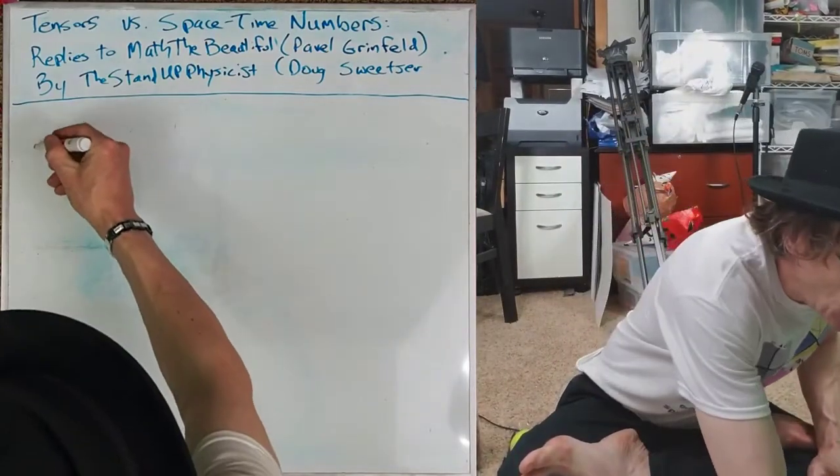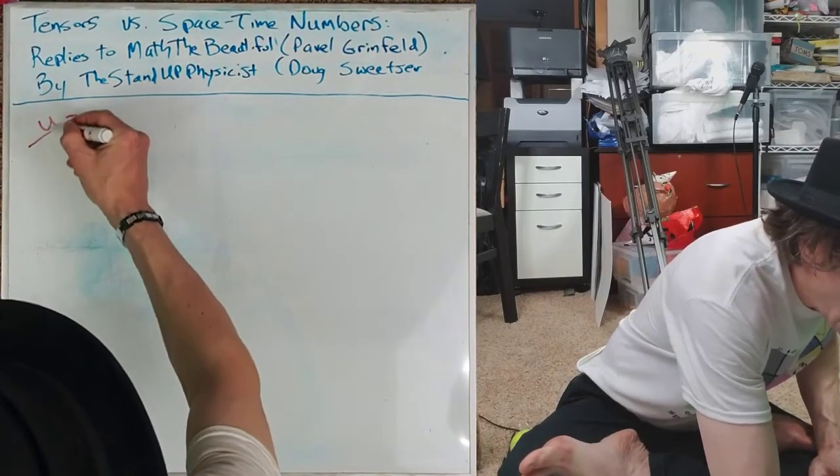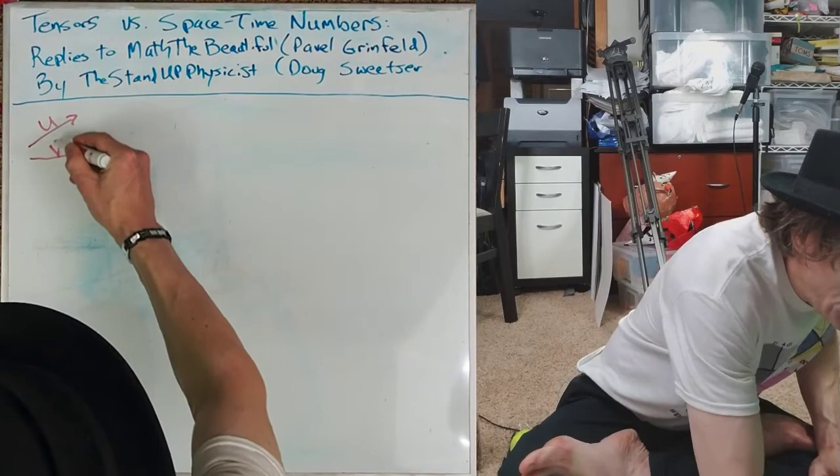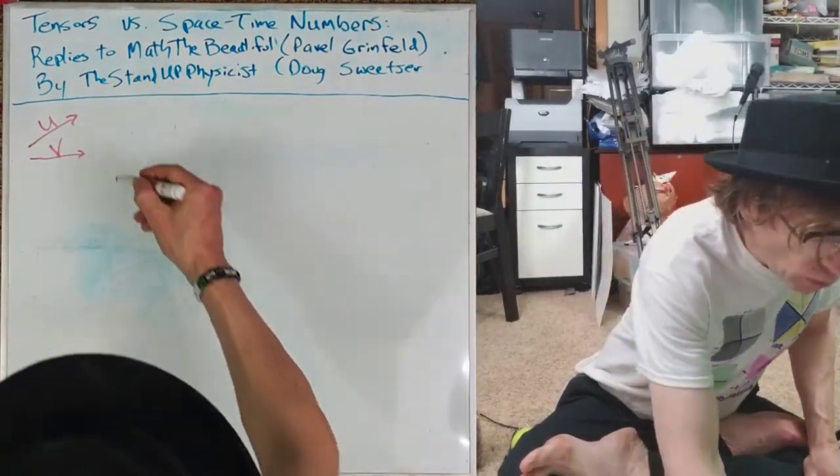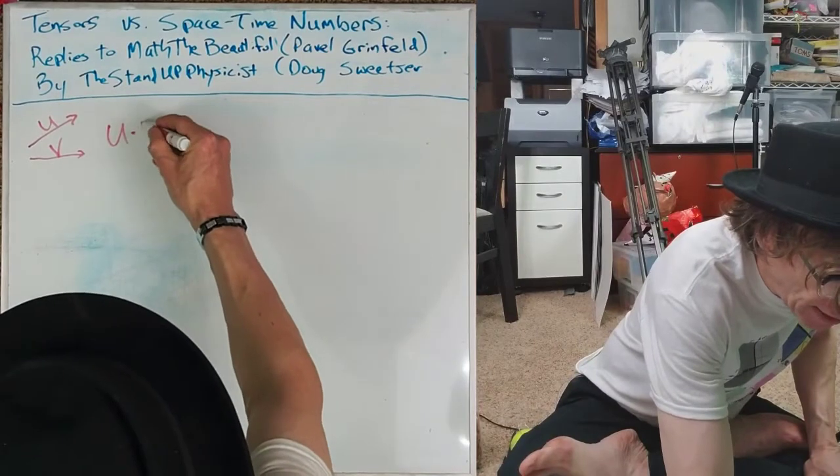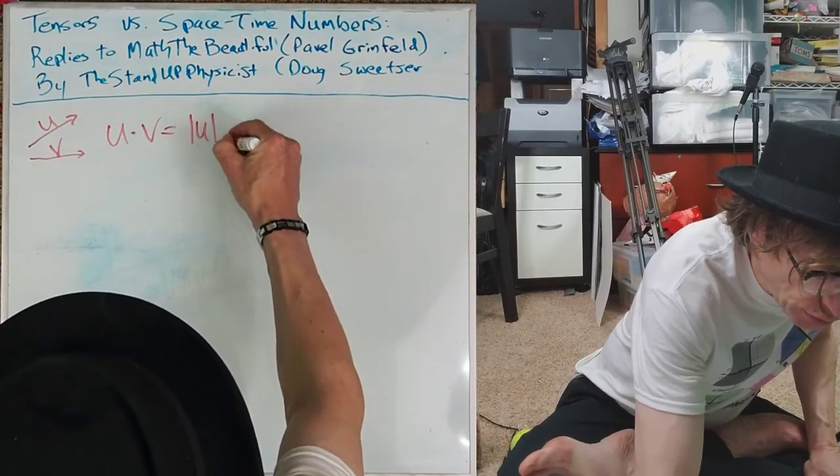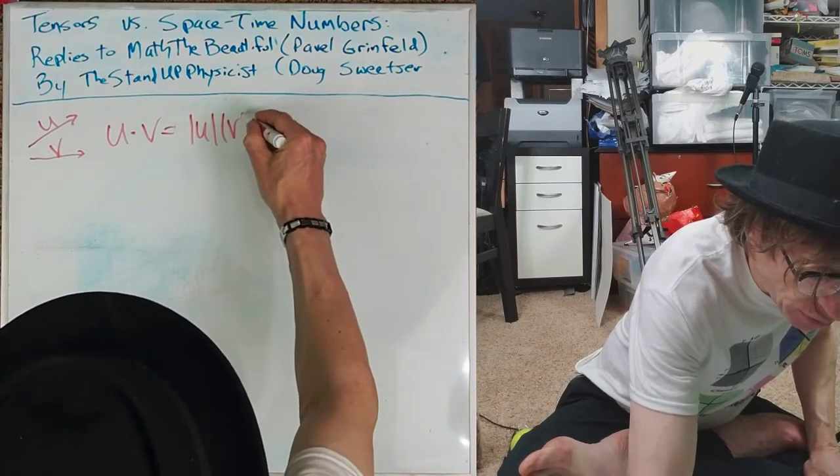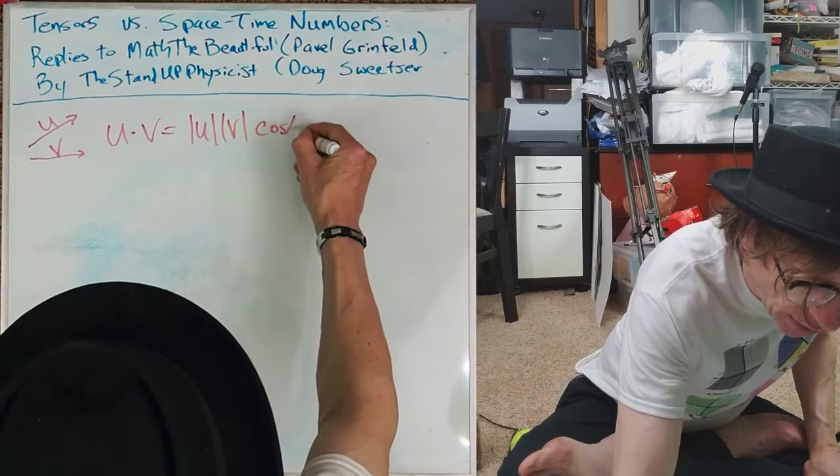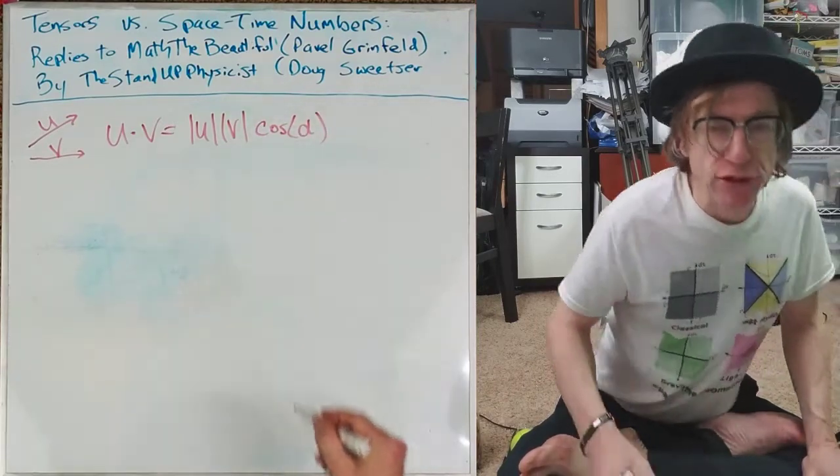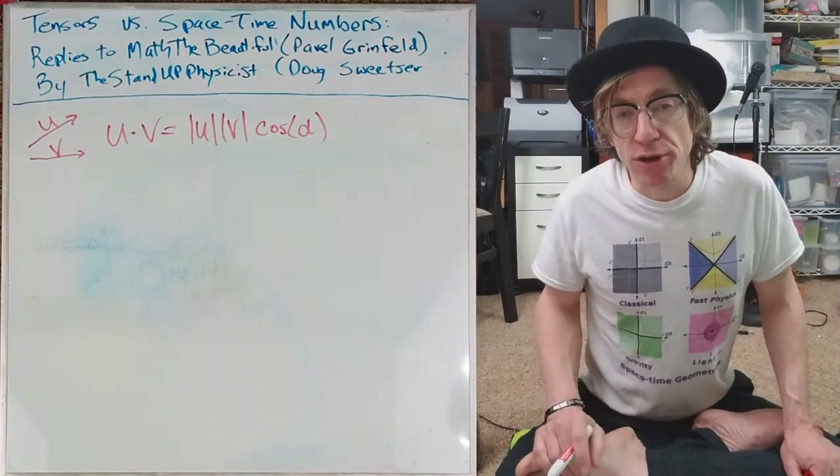he writes out the definition of a dot product. So he says, you've got these things that are directed line segments, call this one U, and another one called V, and there's this dot product of the two, which is U dot V equals the absolute value of U times the absolute value of V times the cosine of the angle between the two.